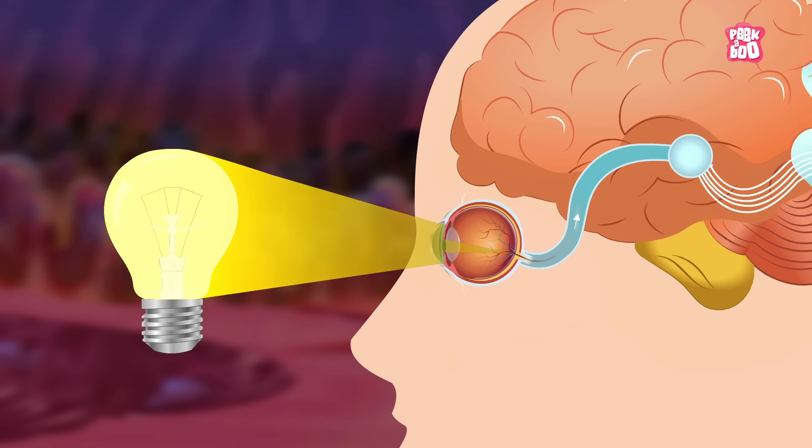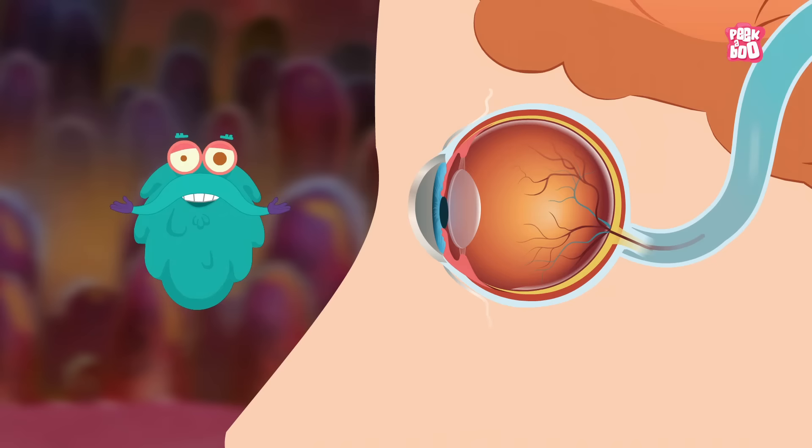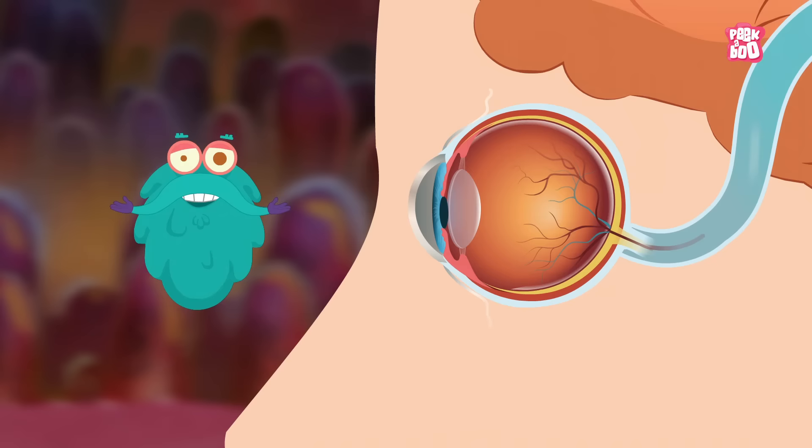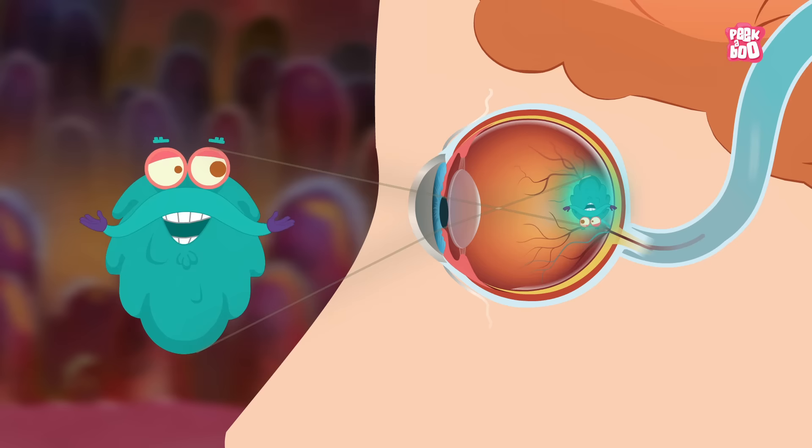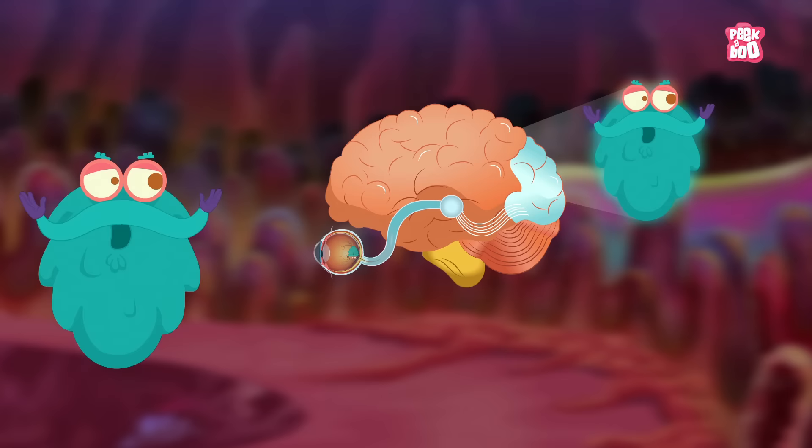Then, the optic nerve of the eye transmits those electronic signals to the brain, which lets you finally see an object. Well, the retina actually perceives the world as upside down, and it is the brain that flips the image back for you.